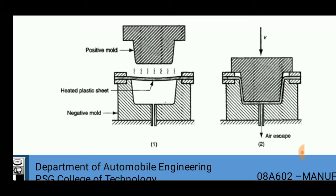The plastic sheet is heated and placed between these supports so that it will be rigid. When the force is applied on the positive mold, it goes down into the cavity of the negative mold and deforms the plastic sheet so that the plastic sheet takes up the shape of this negative mold.